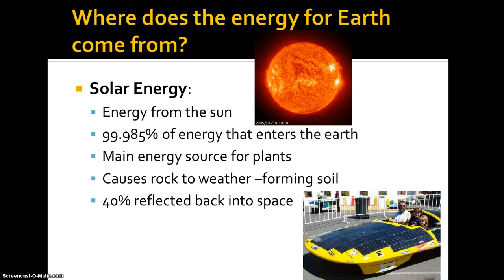Forty percent of what comes to our planet is actually reflected back out to space. We're going to learn a term called albedo later — that refers to how reflective surfaces are. What you're seeing here is an image of the sun. You can see the photosphere there, kind of bumpy and granulated. We'll talk more about that in the astronomy unit, but that is the primary source of energy for this planet.